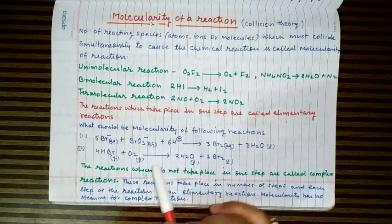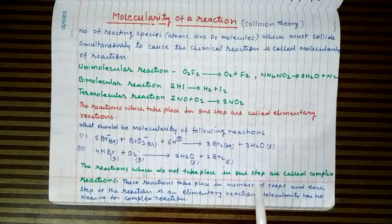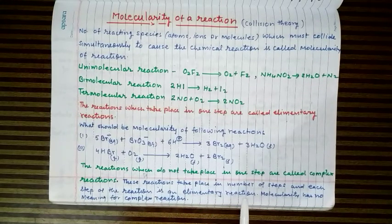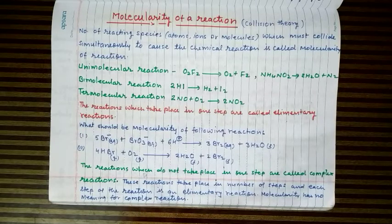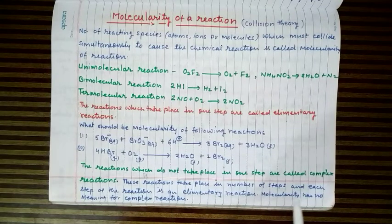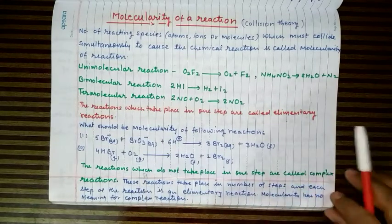Reactions which do not take place in one step but take place in a number of steps are called complex reactions. Each step of a complex reaction is an elementary reaction, because in each step only one, two, or rarely three molecules participate. For complex reactions, molecularity of the overall reaction has no meaning; however, each elementary step has its own molecularity of one, two, or three, depending on the case.